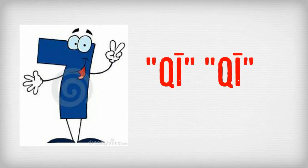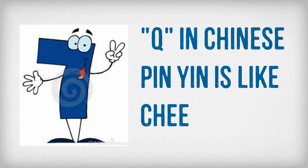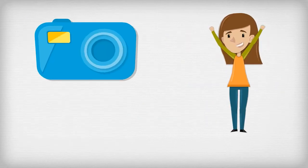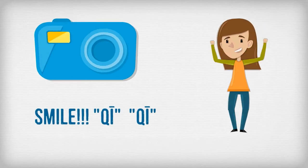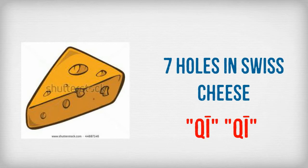Number 7 is QI. The sound of the spelling is QI. The English letter Q in Chinese pinyin is like the QI in 'cheese.' Sometimes when we take a picture, we say 'smile — QI!' Imagine there are seven holes in a sweet piece of cheese to remember QI.